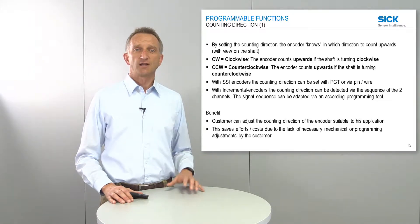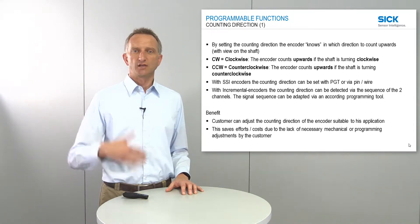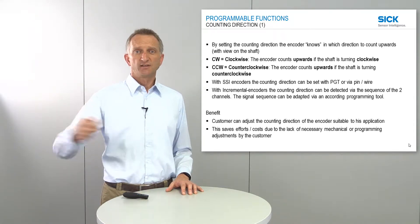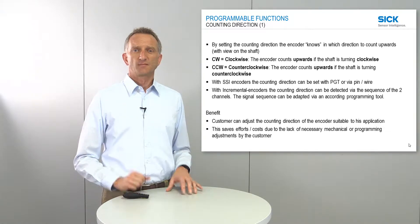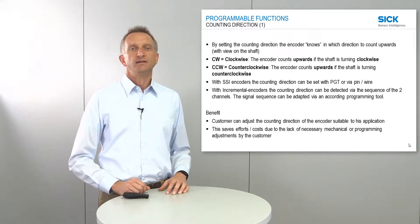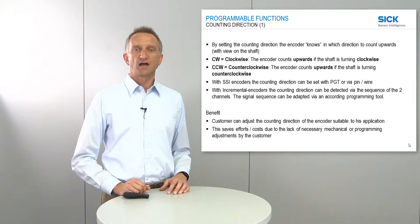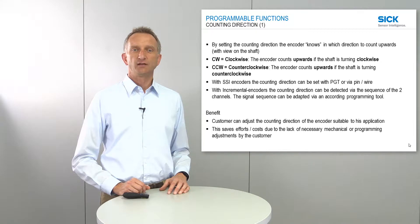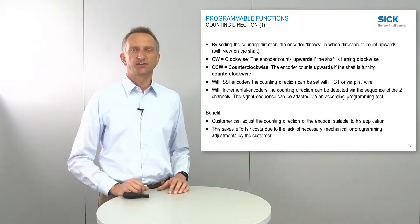Counting direction Cv, meaning clockwise, means that the encoder is counting upwards if the shaft is turning clockwise. On the other hand, Ccv, meaning counterclockwise, means the encoder counts upwards when the shaft is turning counterclockwise.